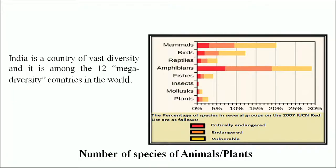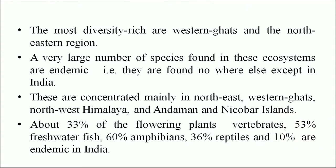The number of species of animals and plants is shown in this bar diagram. India is a country of vast diversity and is among the 12 mega diversity countries in the world. It has very diverse terrestrial and aquatic ecosystems ranging from ice-capped Himalayas to deserts, arid shrub to grassland, wetlands and tropical rainforests, from coral reefs to the deep sea. The most diversity-rich areas are the Western Ghats and the north-eastern region. A very large number of species found in these ecosystems are endemic — found nowhere else except in India — concentrated mainly in the north-east, Western Ghats, north-west Himalaya and Andaman and Nicobar Islands.